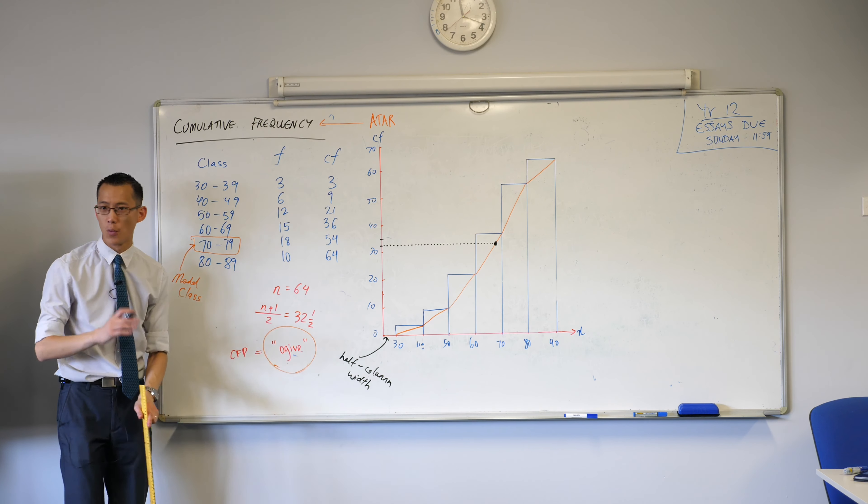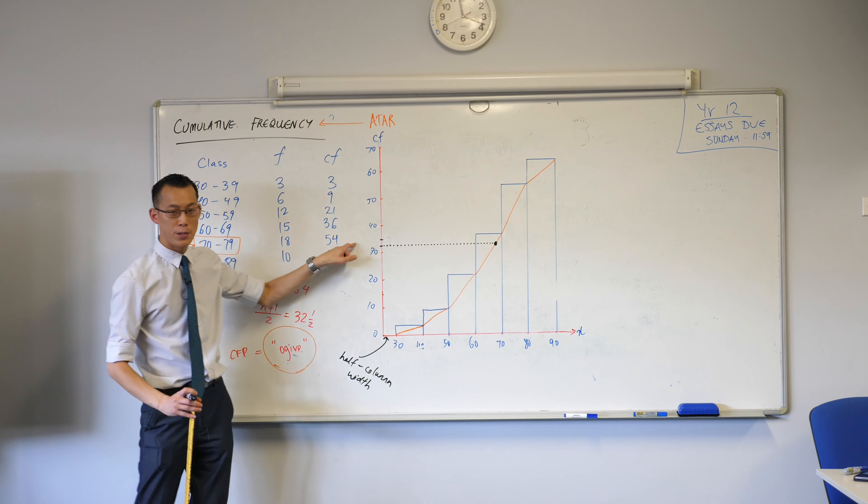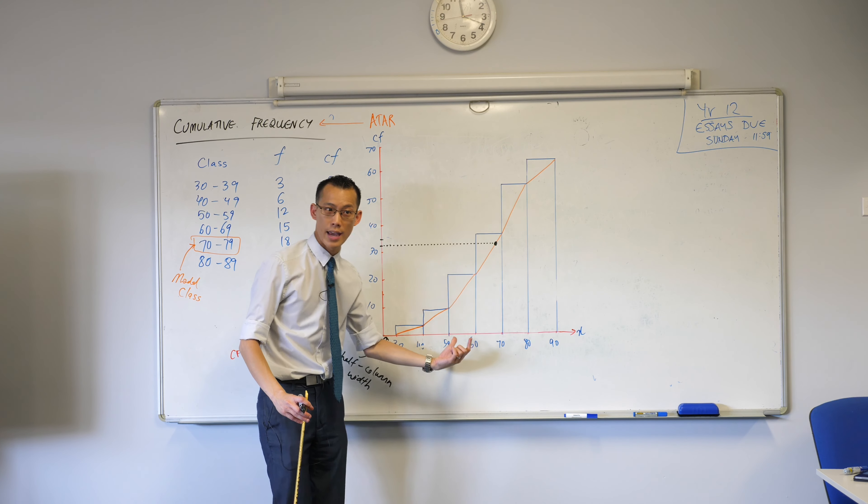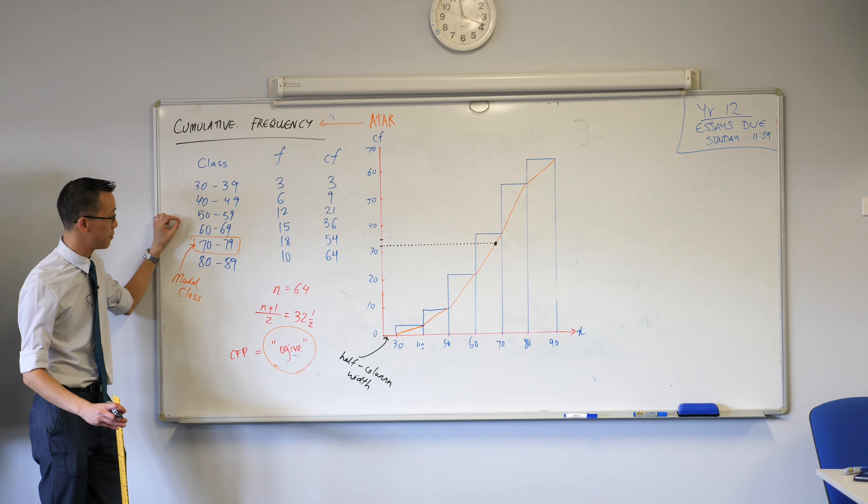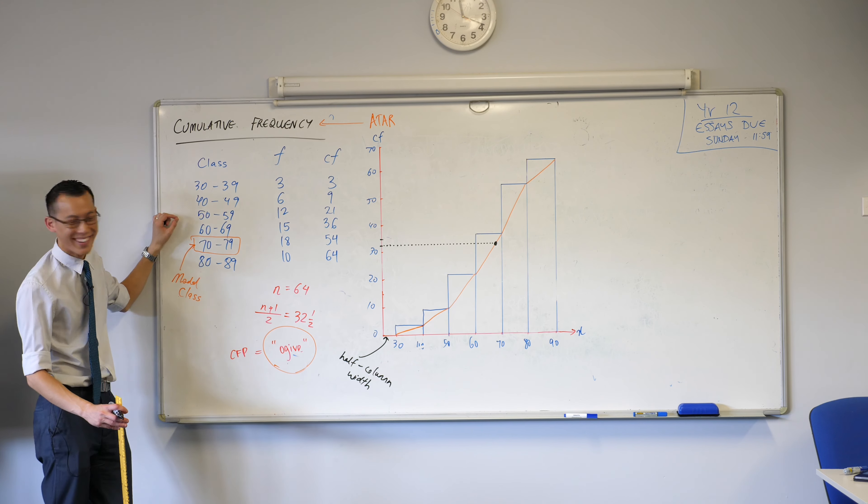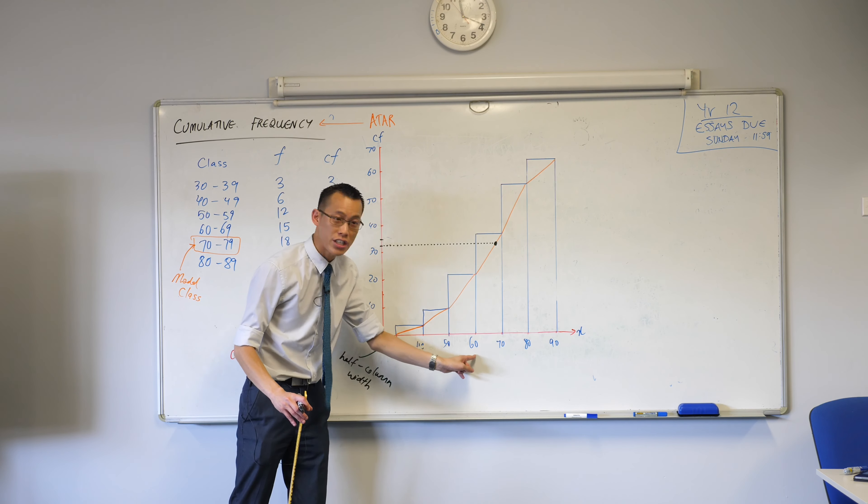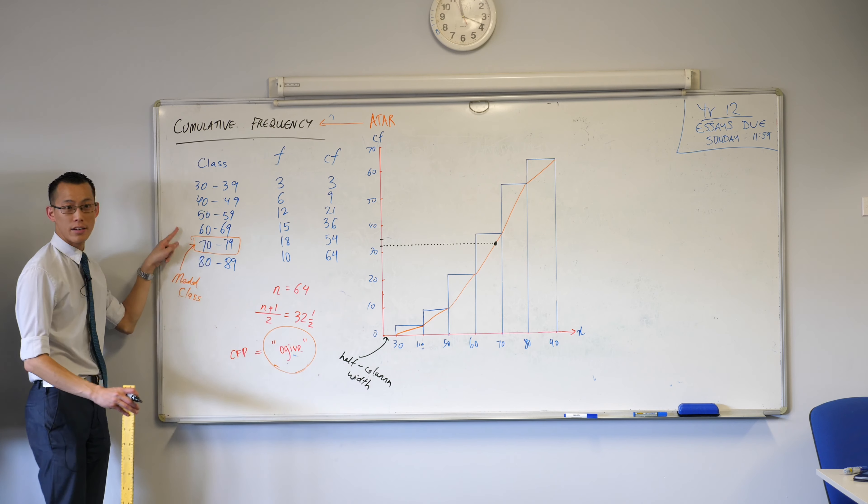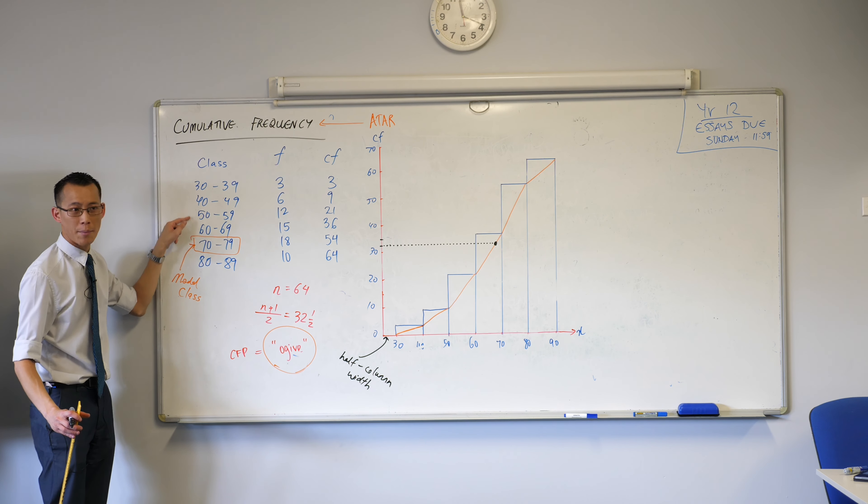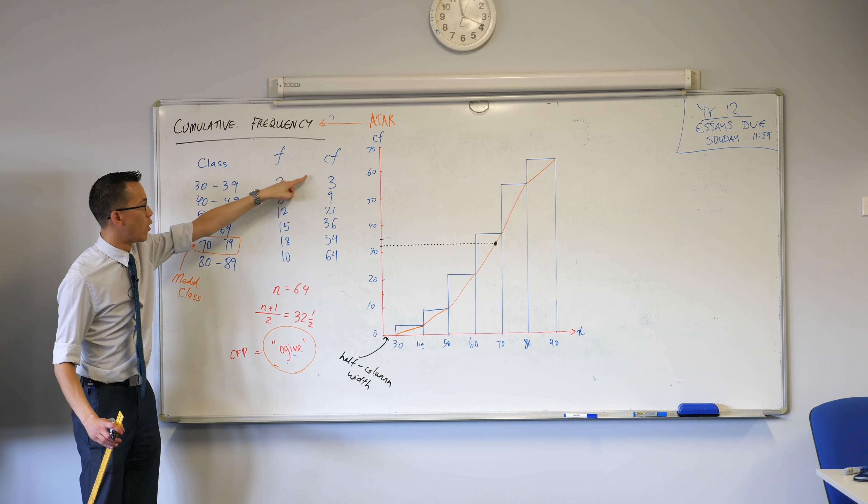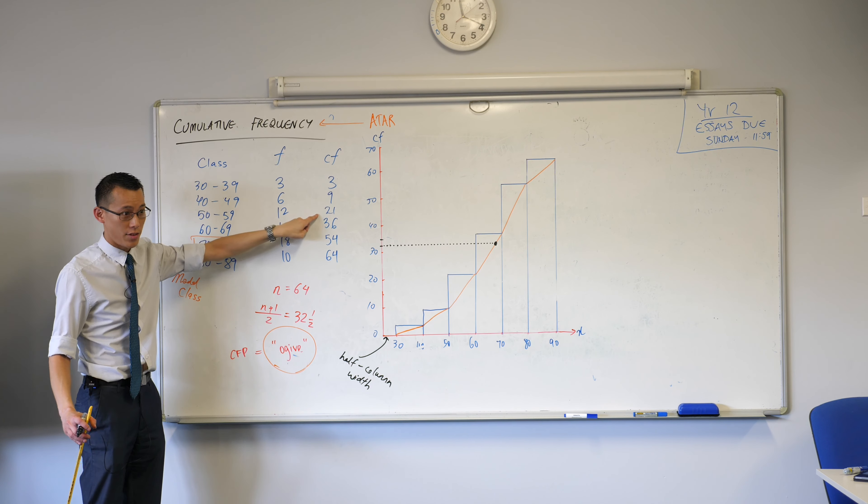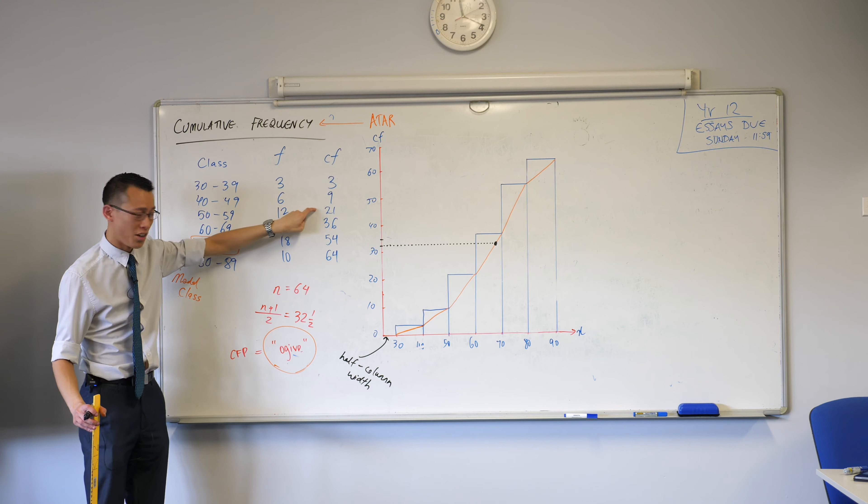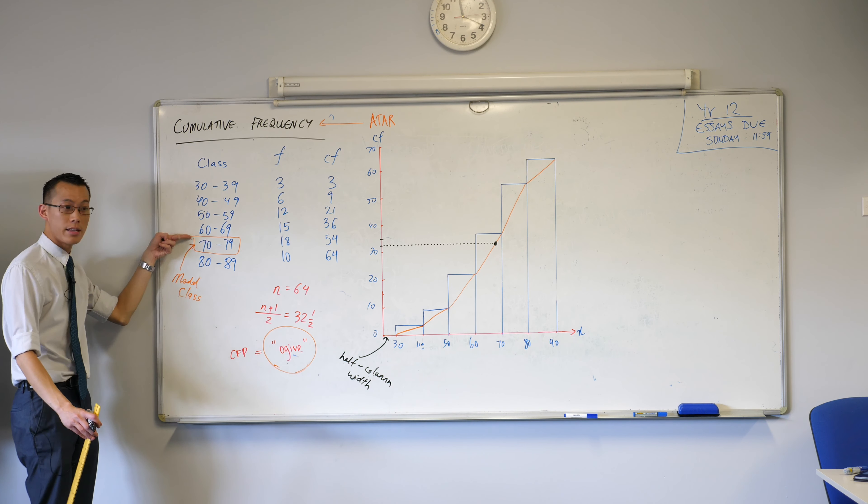Now this is important for two reasons. Number one, let's have a look at where this position 32 and a half comes to meet the bar graph. This answers our previous question when we were umming and ahhing over which class the median would appear in. Have a look. It meets in this 60 to 69 class which most of you did say before but some of you were umming and ahhing over this. It should make sense because positions from the bottom 1, 2 and 3 are here then 4, 5, 6, 7, 8, 9 are here then 10, 11, 12 all the way up to 21 are here. You want it to count up to 32 and 33 which is clearly in the next one.